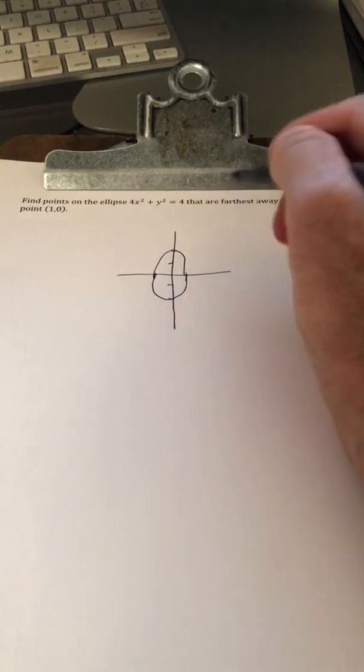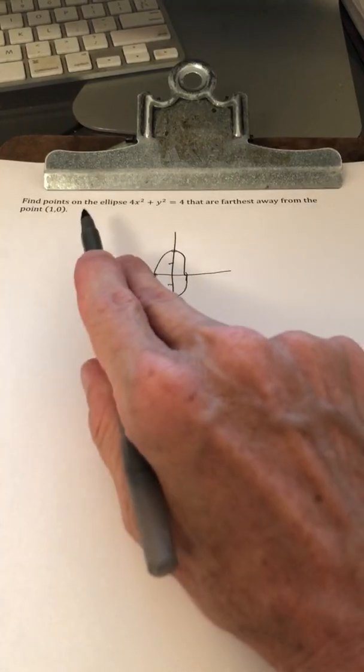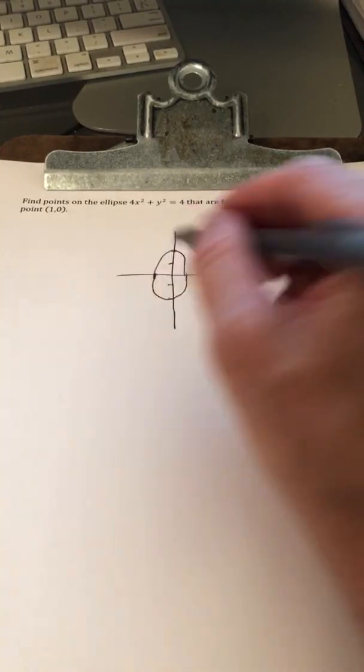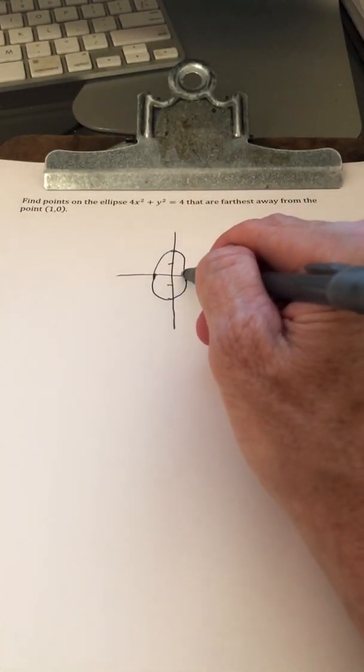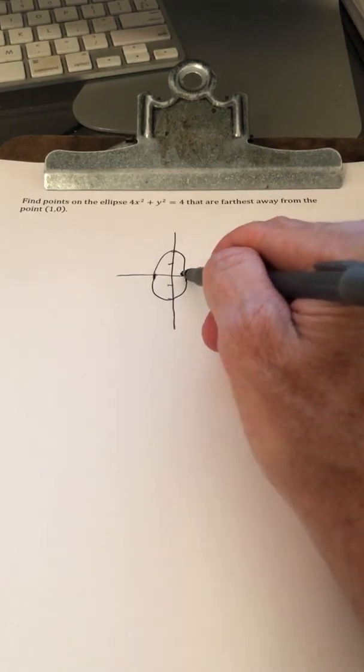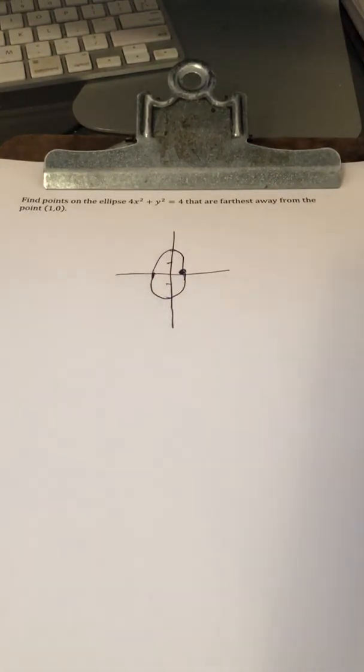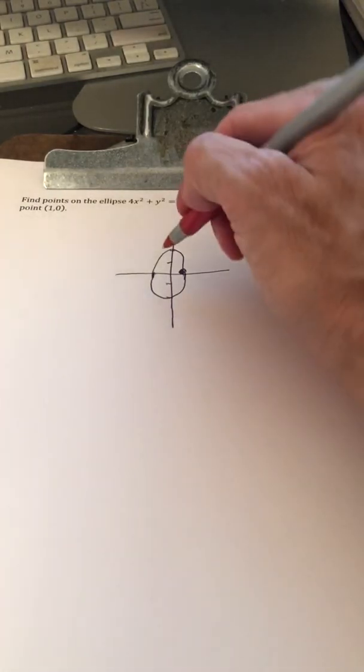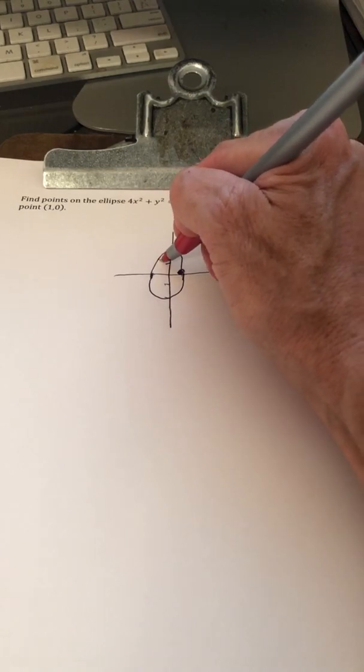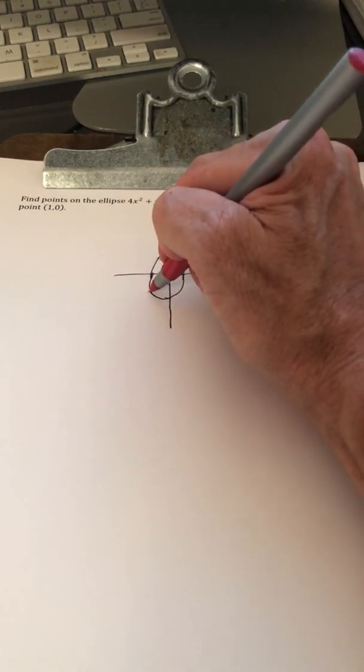So here's our ellipse, and we want to find points on this ellipse that are furthest away from the point (1, 0). This happens to be one of our x intercepts, so I think we're going to get two answers here.